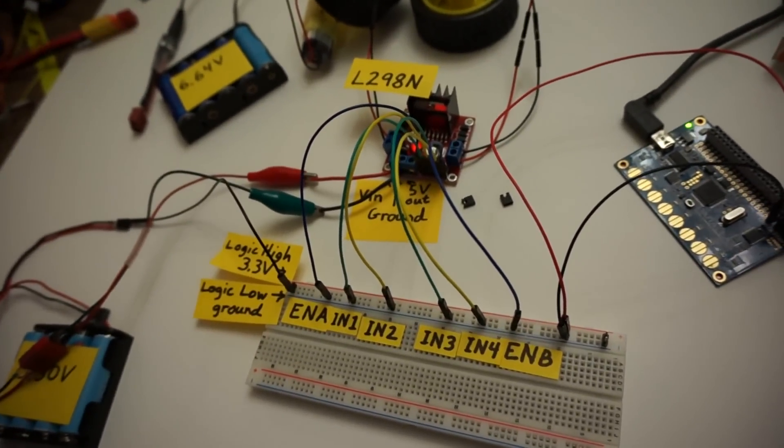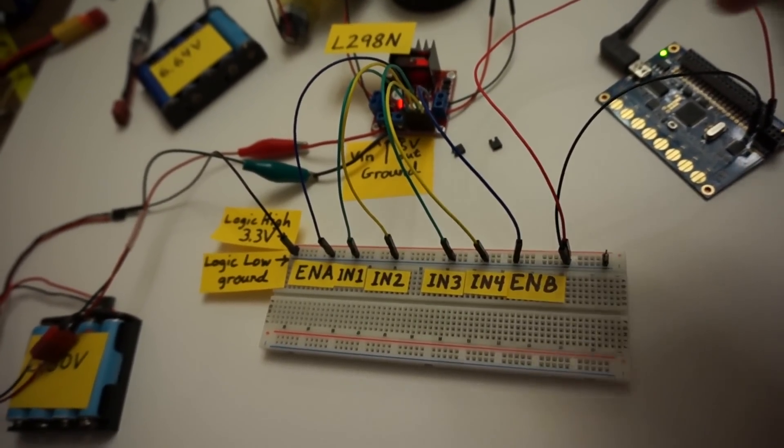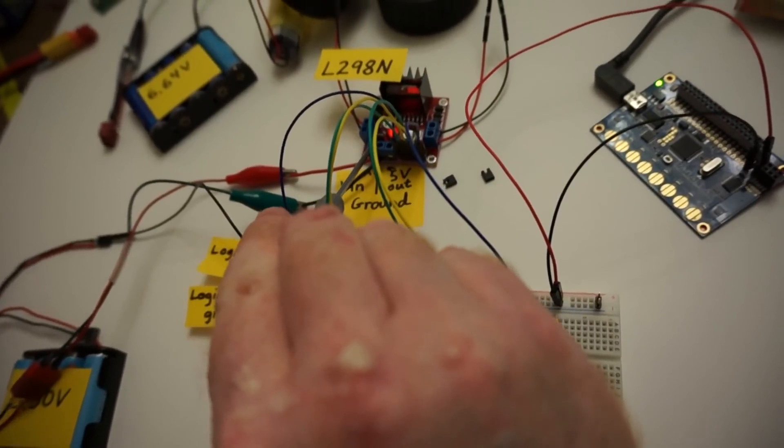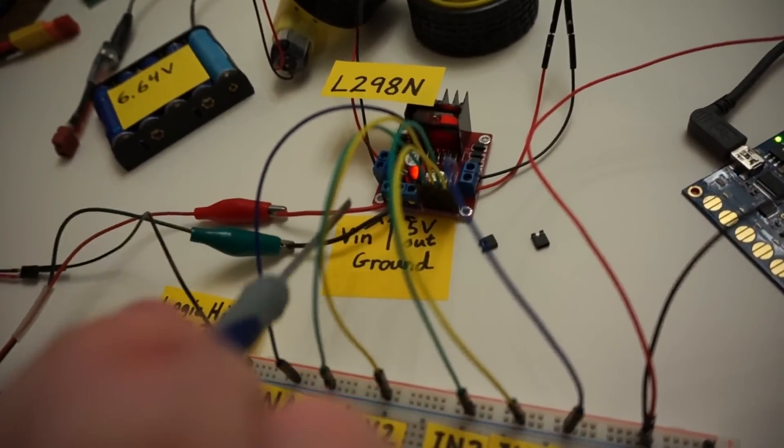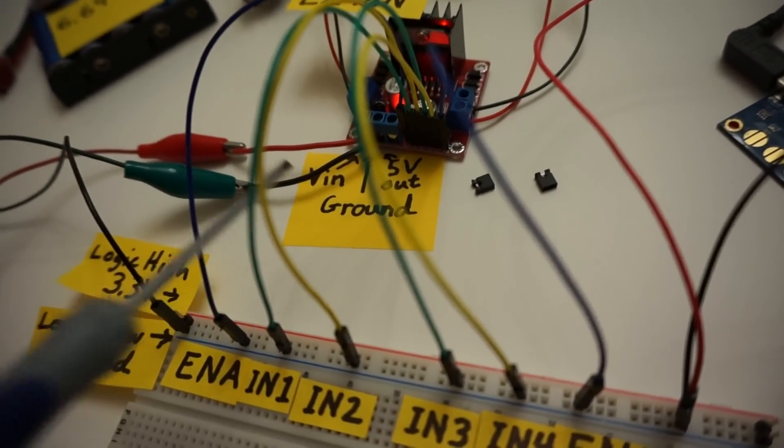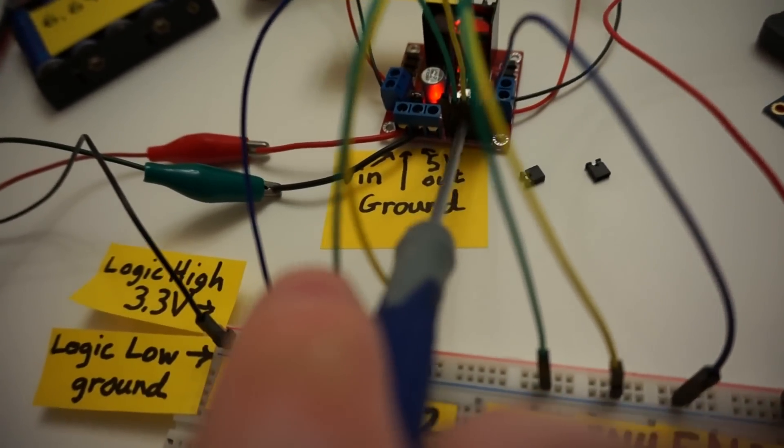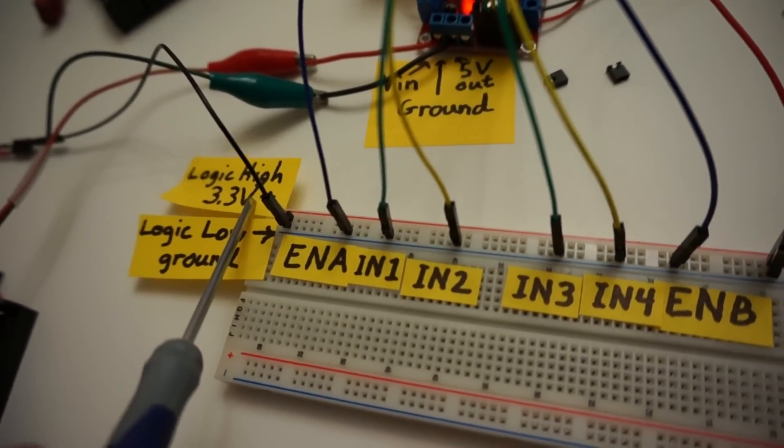Okay, so let's get started. Now the input on the L298 is supposed to be two and a half volts higher than whatever you're using to control the logic. Okay, so since I'm using 3.3 volts for logic right now,